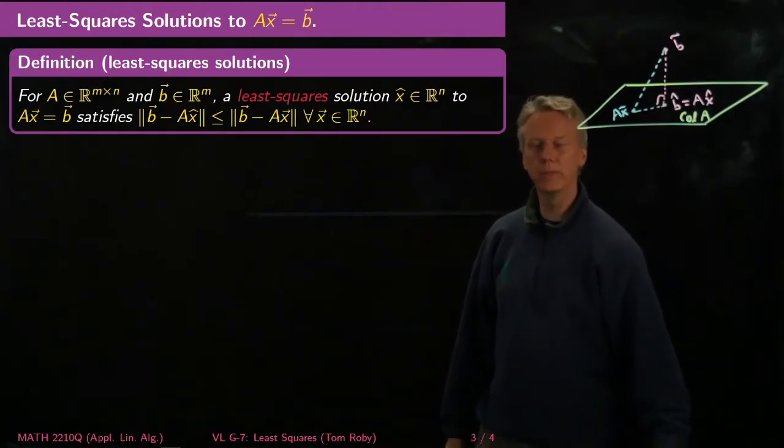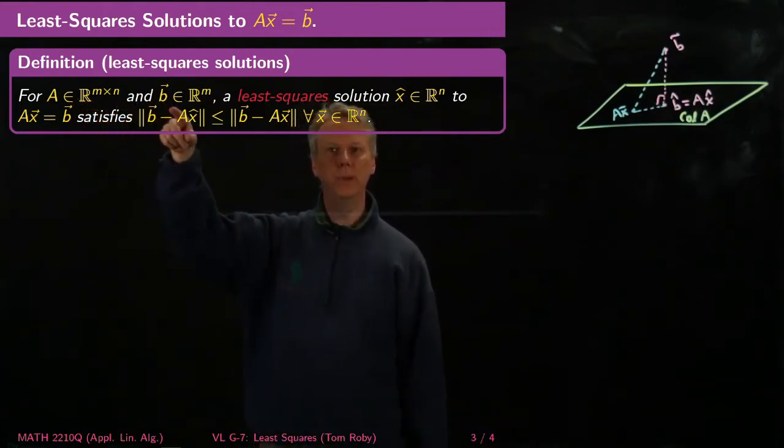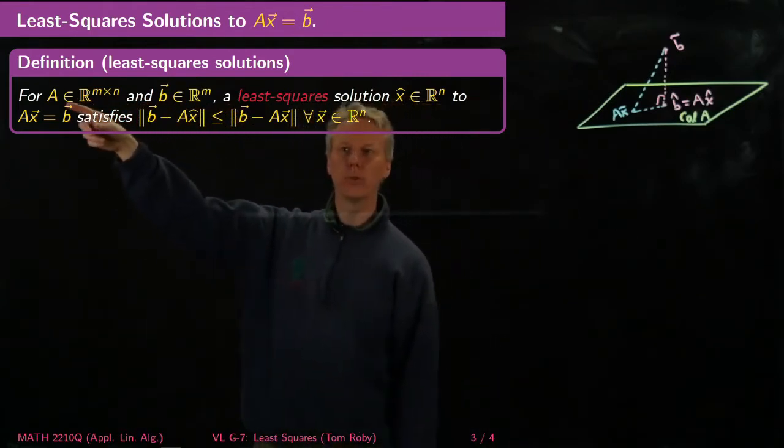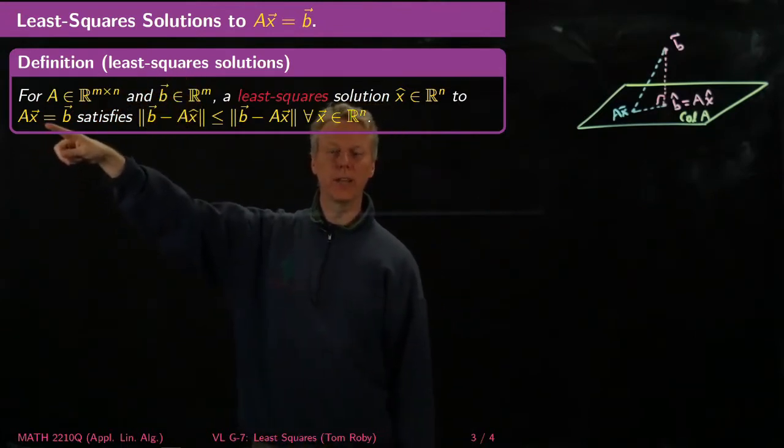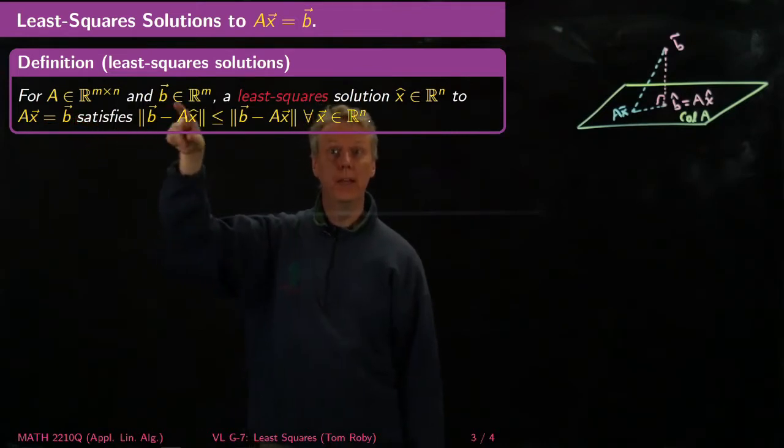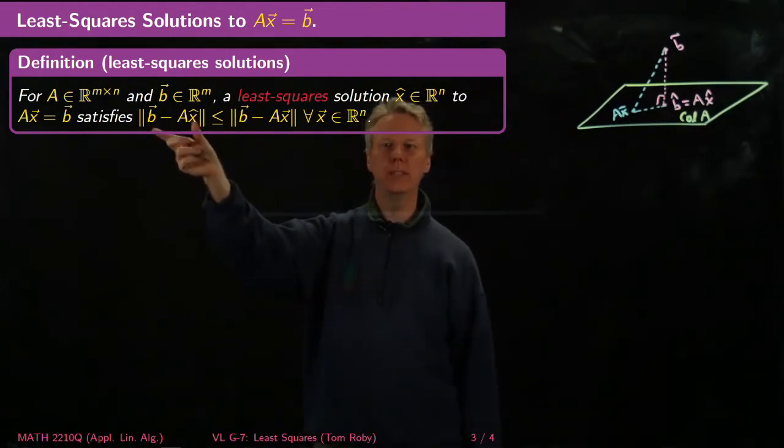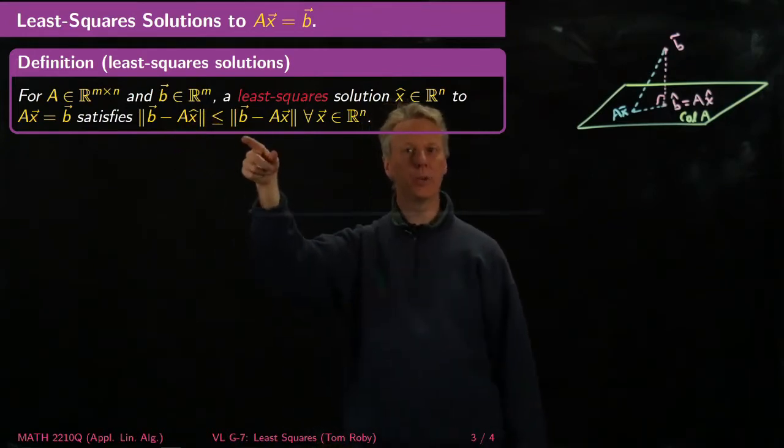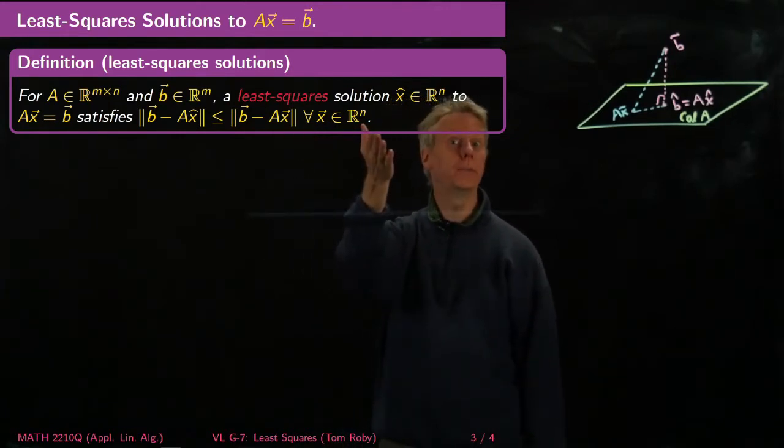But so here's the definition. Let A be an m by n matrix and b is in R^m. Think of A as representing the transformation that takes you from R^n to R^m. It inputs vectors X in R^n, outputs vectors B in R^m. The least-square solution, X hat, is the one which makes the difference between the thing I wanted to get to and the thing I can actually get to as small as possible. In other words, ||b - Ax hat|| ≤ ||b - Ax|| for every X in R^n.